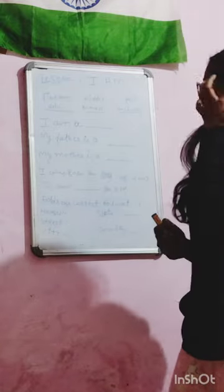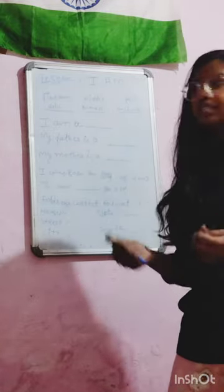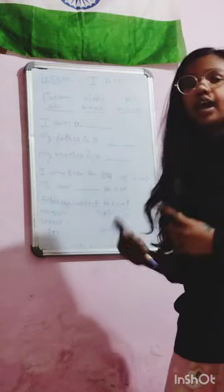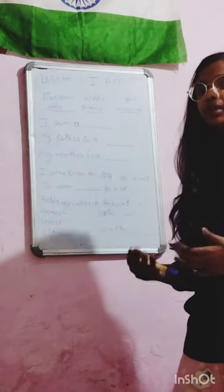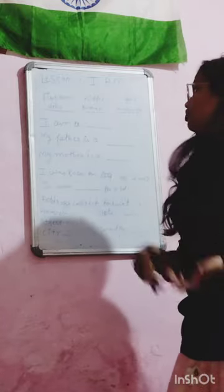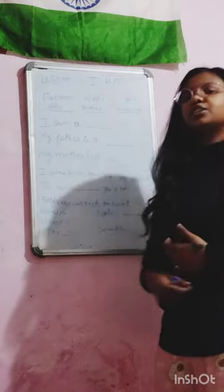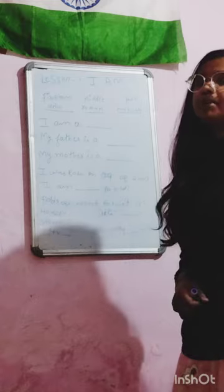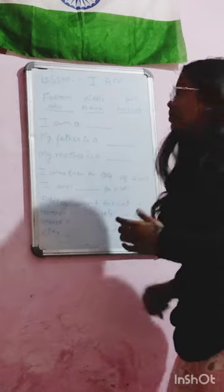So let's come to the first step, that is lesson number one: I am. 'I am' means 'Main Hoon' or 'Main'. So let's start — how can we introduce ourselves to a person who is completely unknown to us? So let's just start from here.